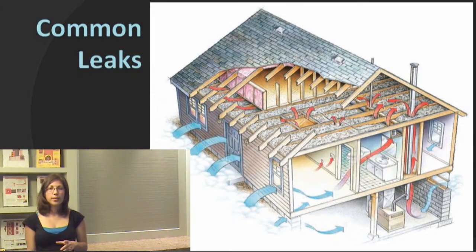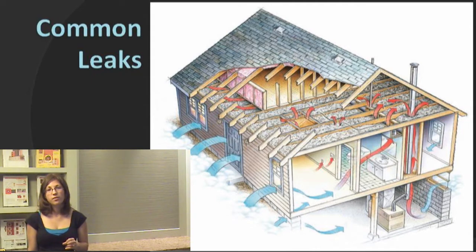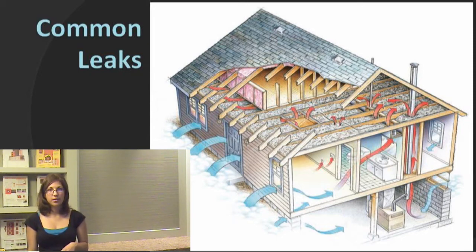Some of the most common leaks in a house are through the ducts. They're also found around windows and doors, around seams — between walls, between the wall and the foundation, and between the wall and the roof. You can also find them around electrical outlets, pot lights, and drop ceilings. All these areas are things that an auditor will pay special attention to while walking around your house.